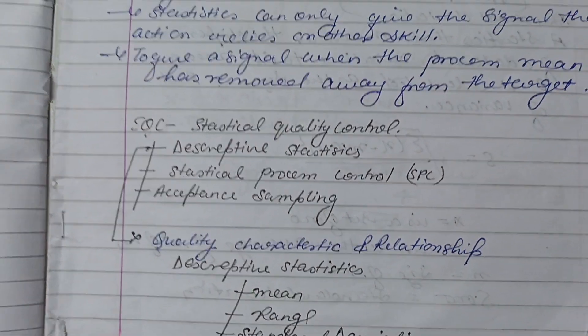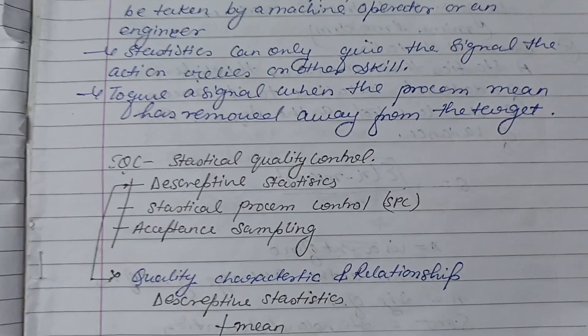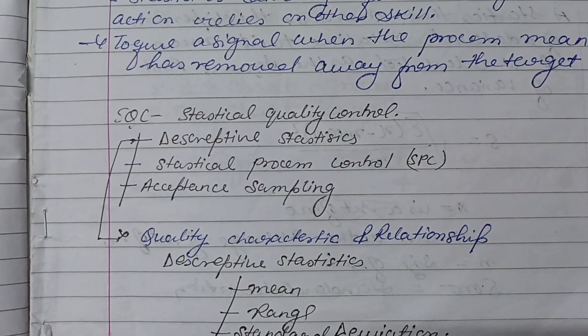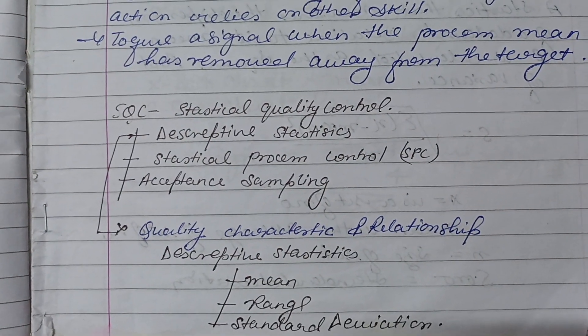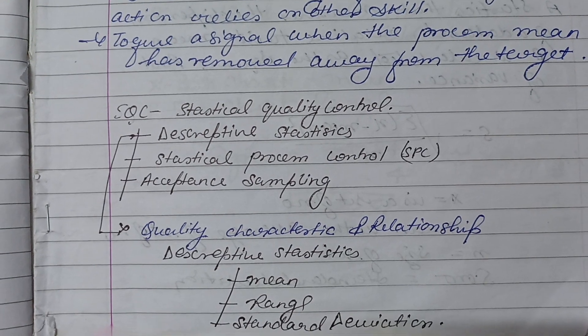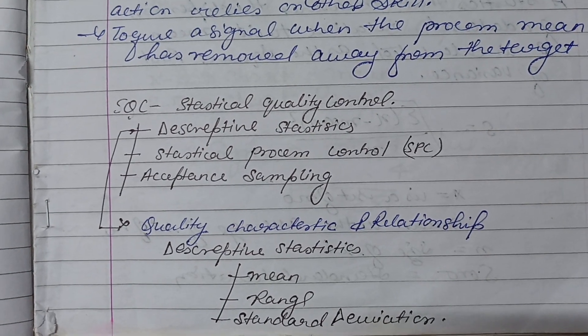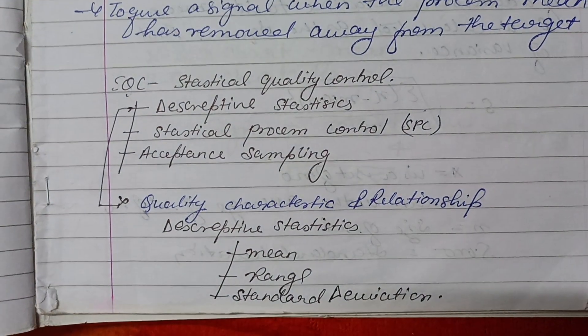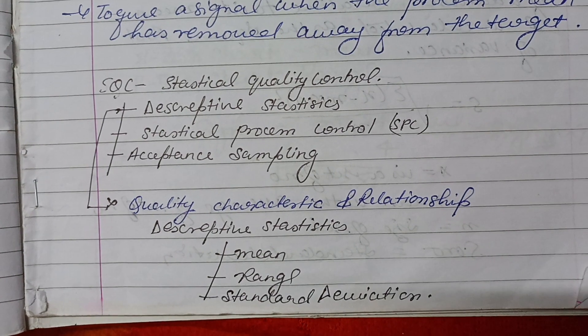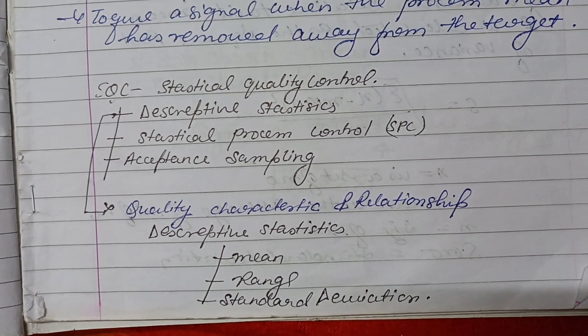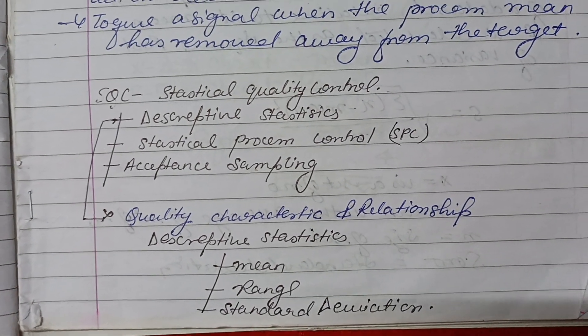Statistical Quality Control includes Descriptive Statistics, Statistical Process Control, and Acceptance Sampling. In descriptive statistics, the quality characteristics and their relationships are examined.